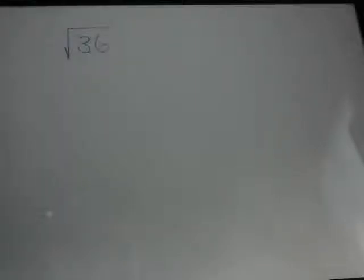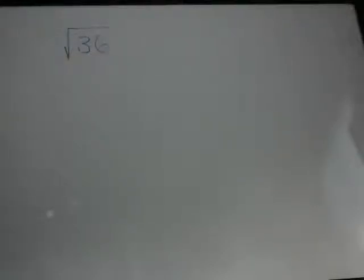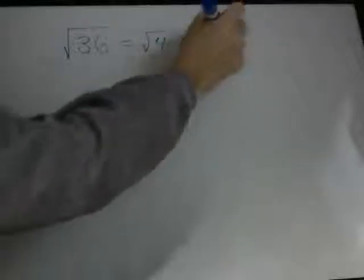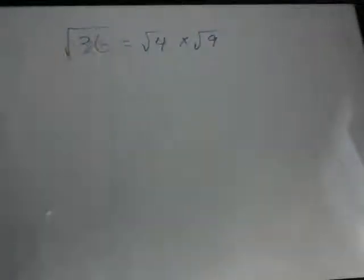So what we're going to talk about here is simplifying roots, and we're going to start with a simple example using 36. You should know that the square root of 36 is 6, but I'm going to use this to show you how you can simplify roots you don't know offhand. When you look at 36, you know that 4 times 9 is 36, and that the square root of 4 is 2 and the square root of 9 is 3. When you look at a number under a square root, you should try to think about what roots you know immediately — the square root of 4 and the square root of 9 — and that 4 times 9 is 36.